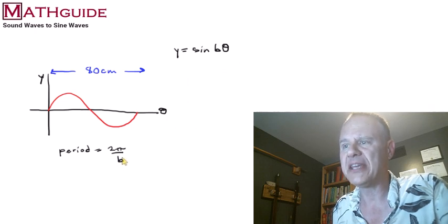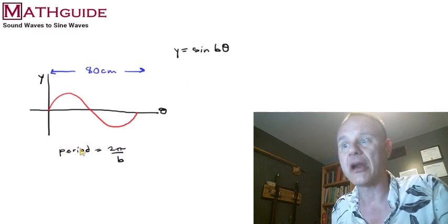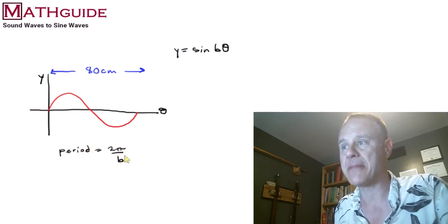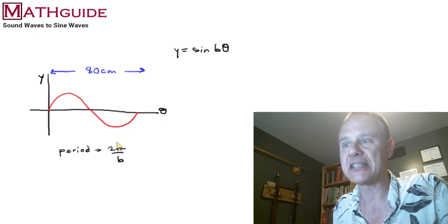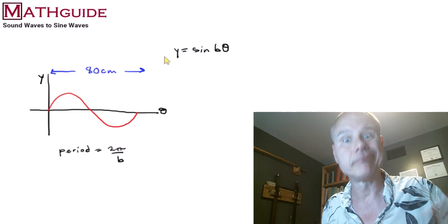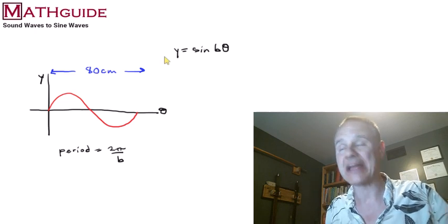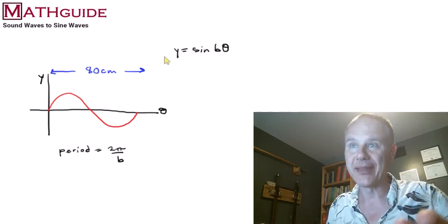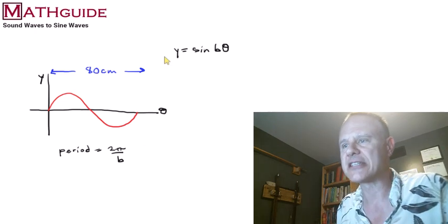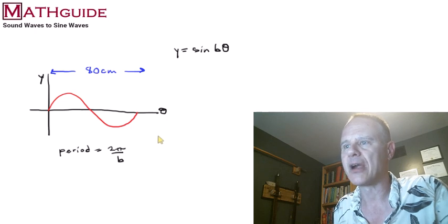Now, b and the period are wrapped up together in this relationship. Period equals 2 pi divided by b. I'm not using 360. I'm using 2 pi because I'm not talking about an angle here, really. I'm not talking about degrees. So when you're using a number like this, it's customary to use the 2 pi.